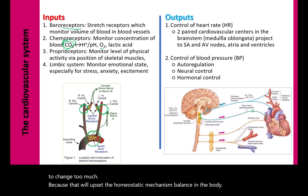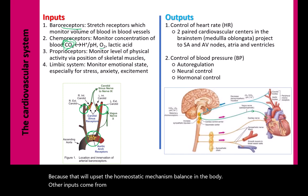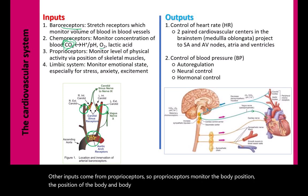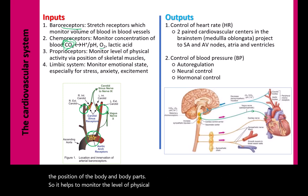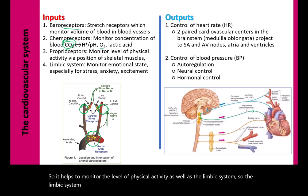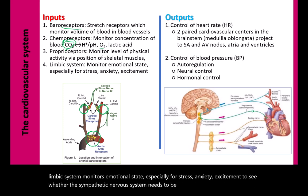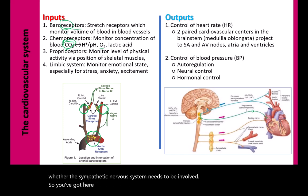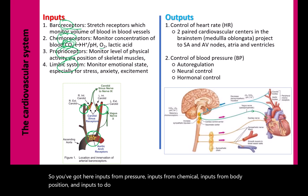Chemoreceptors monitoring CO2 are more sensitive than those monitoring oxygen because CO2 is strongly linked to proton concentration and therefore pH. Maintaining stable pH is critical for homeostasis. Other inputs come from proprioceptors, which monitor body position and physical activity level, and from the limbic system, which monitors emotional states like stress, anxiety, and excitement to determine if sympathetic activation is needed.